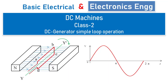Hi, welcome to another session of basic electrical electronics engineering. We were dealing with DC machines in the last class, before magnetic circuits, treating DC machines as class 1. In today's class we are going to see the simple loop operation of a DC generator — how a sine wave is generated when a coil placed between north and south changes its position from B to C, C to D, and D to A as it rotates in the magnetic field.